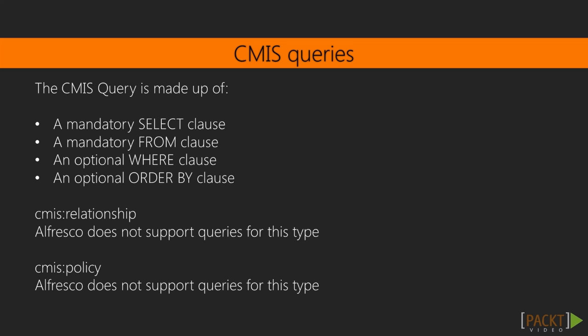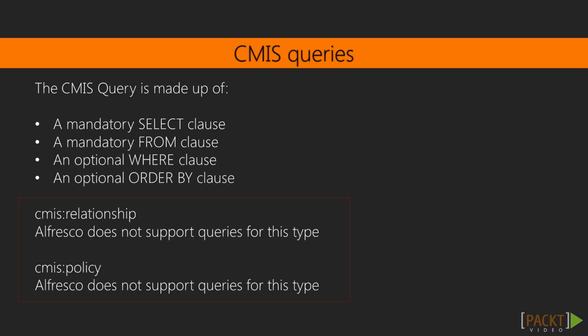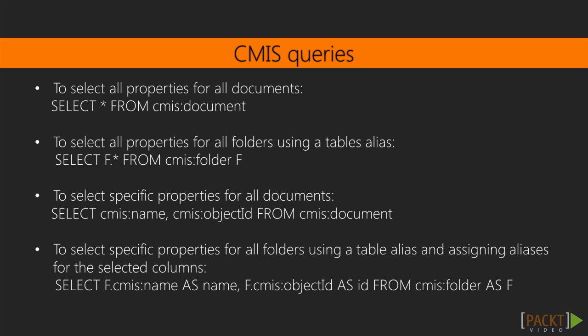The object types are those in the list on the slide, although the policy and relationship objects cannot be used in Alfresco-related CMIS queries. For starters, we can build some CMIS queries, as shown on this slide.